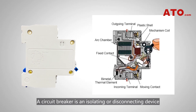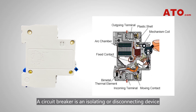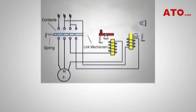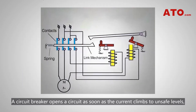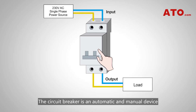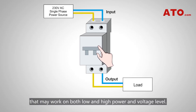A circuit breaker is an isolating or disconnecting device designed to protect an electrical circuit from damage caused by excessive current like overload and short circuit conditions. A circuit breaker opens the circuit as soon as the current climbs to unsafe levels and can be used repeatedly. The circuit breaker is an automatic and manual device that may work on both low and high power and voltage levels.